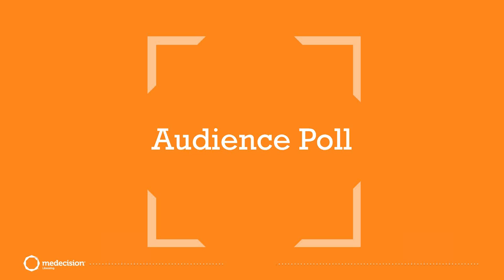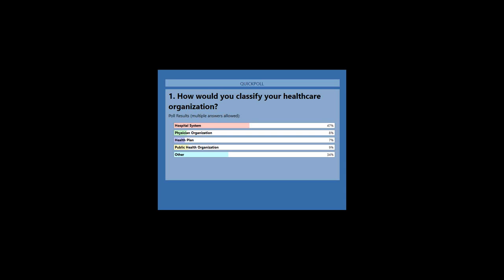We have an audience poll to start off with. Our first poll question is: how would you classify your healthcare organization? A, hospital system; B, physician organization; C, health plan; D, public health organization; or E, other. Thank you all for answering the poll. 47% of you answered that you are part of a health system, 8% are part of a physician organization, 7% are part of a health plan, 9% are part of a public health organization, and 34% of you are other.